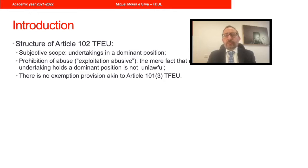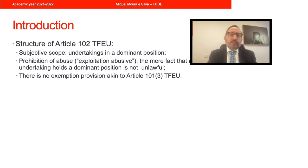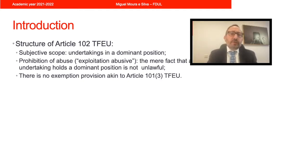The structure of Article 102 is fairly simple compared with Article 101. Firstly, regarding the subjective scope, Article 102 only creates obligations on undertakings that have a dominant position in a specific market. The simple fact that you hold a dominant position is not illegal as such, but the fact that you have a dominant position implies that you're subject to specific conduct rules under Article 102 that would not be applied to other companies.